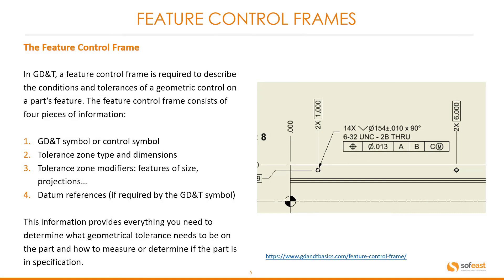Let's have a look at some of the details on how to get a GD&T onto a drawing. We need a feature control frame. In GD&T, a feature control frame is required to describe the conditions and tolerances of a geometric control on a part's feature. The feature control frame consists of four pieces of information: one, GD&T symbol or control symbol; two, tolerance zone type and dimensions; three, tolerance zone modifiers, features of size and projections; and four, the datum references if required by the GD&T symbol. This information provides everything you need to determine what geometrical tolerance needs to be on a part and how to measure or determine if the part is in specification.